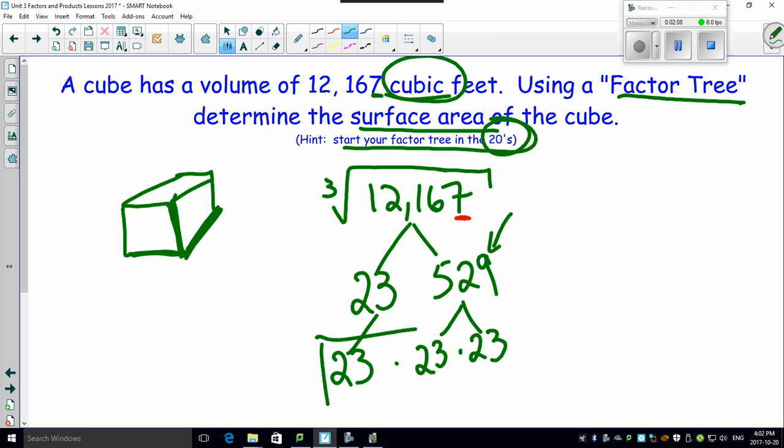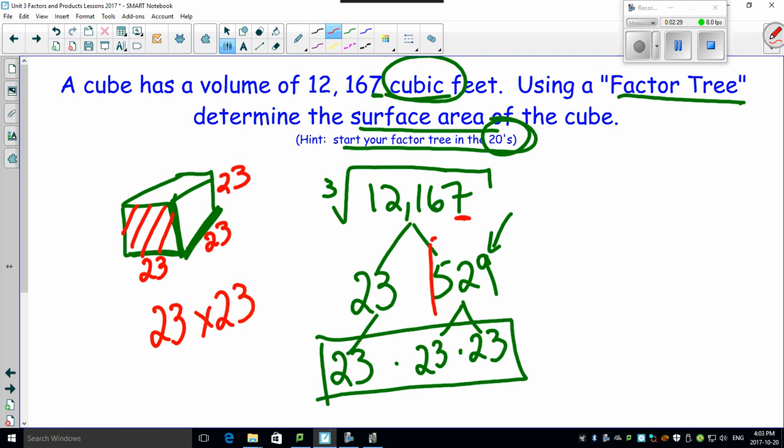So using the factor tree, I found out the cube root of this thing is actually 23. So that means each one of these sides is 23 by 23 by 23. So let's look at the front surface. The front surface then would be 23 times 23, which the nice thing about the factor tree is I already have that number, which is right here. So I know it's 529 for just the surface of the front face.